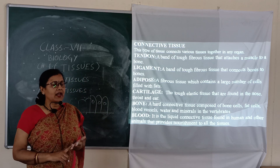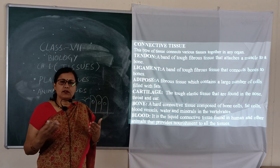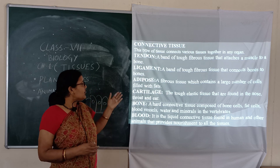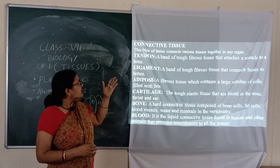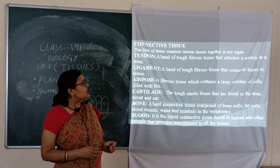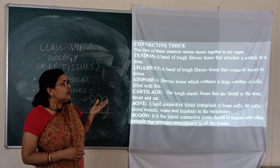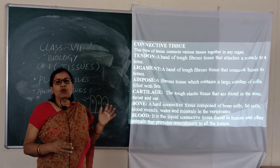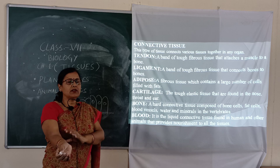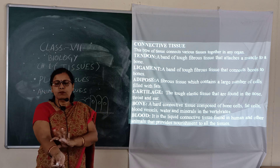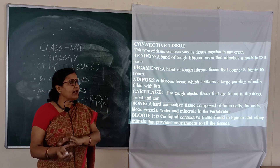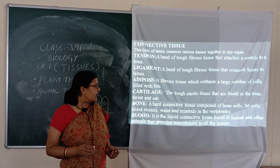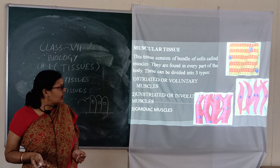Adipose tissue means fat — fat globules stored in the body, present in people who are fatty. A tendon is a band of tough tissue that attaches muscle to bone. Cartilage is tough tissue found between bones, such as at the elbow joint. Bone is hard connective tissue, and blood helps in transportation, providing nourishment to all parts of the body.